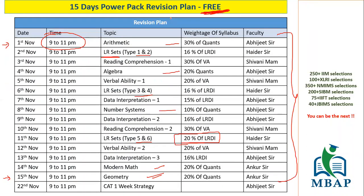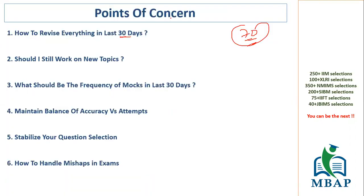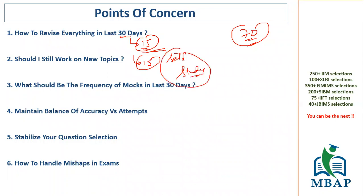That covers the first 15 days. Now comes the next 15 days, which is a 15-day self-study revision plan. Understand: it's ultimately you who's going to get the score, it's you who's going to sit in that exam. So you have to self-study based on the revision pointers that we give you in the first 15 days, and repeat those pointers on your own.